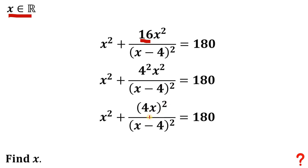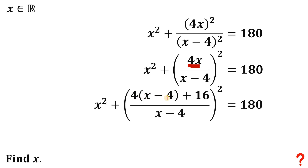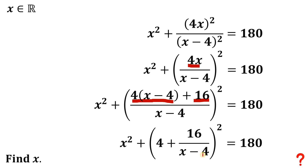So we have (4x)² over (x minus 4)², which is equivalent to (4x/(x-4))². Now here comes the trick: we rewrite 4x as 4 multiplied by (x minus 4) plus 16. This is equivalent to 4x because distributing gives 4x minus 16, then adding 16 gives zero. So we can divide both terms in the numerator by (x minus 4), giving us 4 plus 16 over (x minus 4).